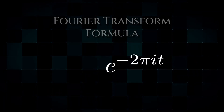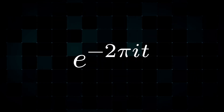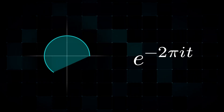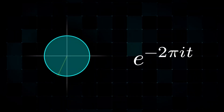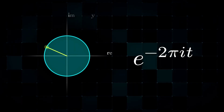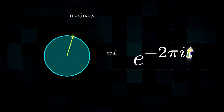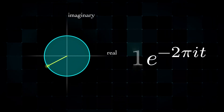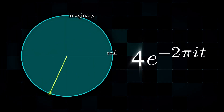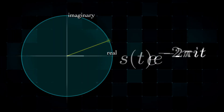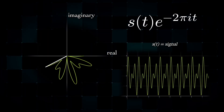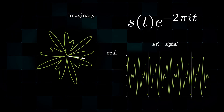This imaginary exponent already looks scary enough, but fear not. Really, it's just a circle. This is just our way of expressing clockwise rotation around the unit circle as a function of time t in the complex plane. If we multiply by a real number, we can modify the radius. But even better, if we multiply by a function that represents a signal, we can wrap our signal around the circle.